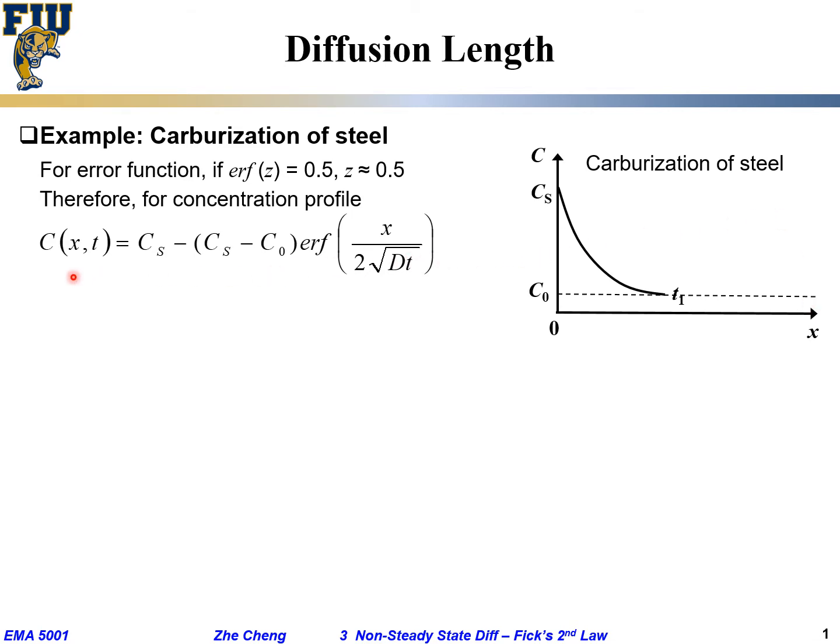From previously, this is our analytical solution. Cs is surface, we fixed. And the error function, what people find is, if the whole error function equals 0.5, then that factor z is roughly 0.5. I put an approximate sign over there.